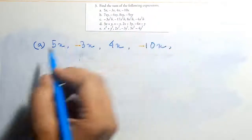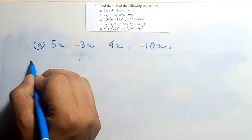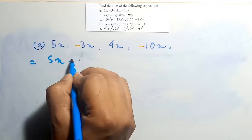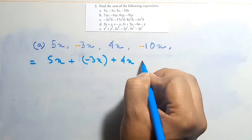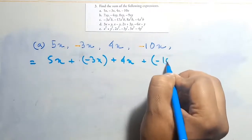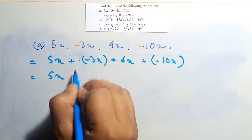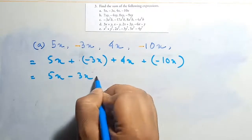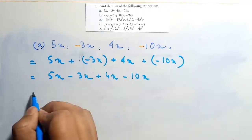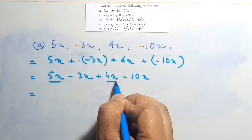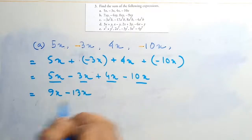Question 3: find the sum of the following expressions. Question A: 5x minus 3x plus 4x minus 10x. Grouping positives: 5x plus 4x equals 9x. Grouping negatives: minus 3x minus 10x equals minus 13x. So the answer is 9x minus 13x, which equals minus 4x.